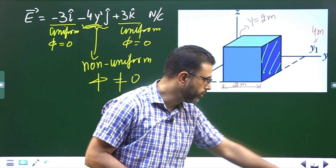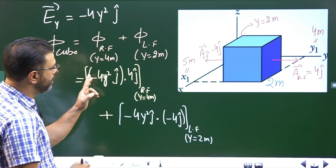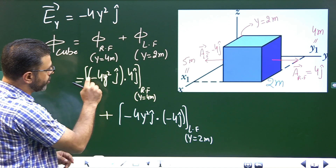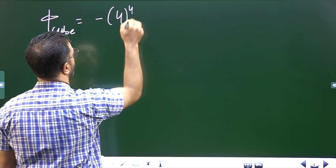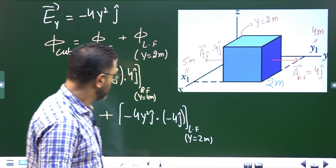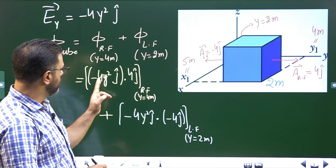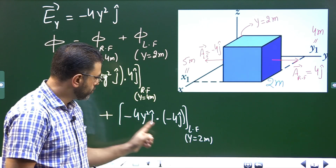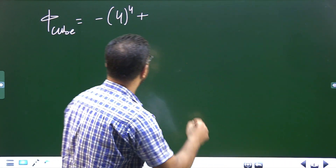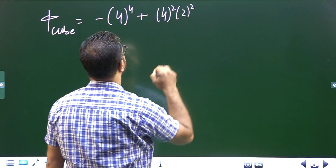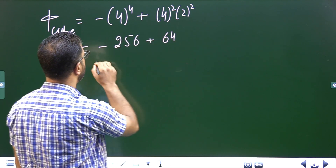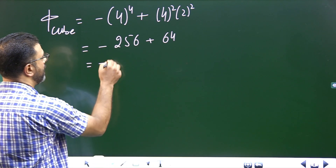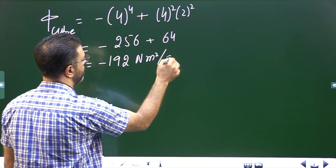The total flux through the cube equals flux through the right face plus flux through the left face. For the right face: (−4 × 4²j) · (4j) = −4 × 16 × 4 = −256 N·m²/C. For the left face: (−4 × 2²j) · (−4j) = +4 × 4 × 4 = +64 N·m²/C. So the total flux is −256 + 64 = −192 N·m²/C.